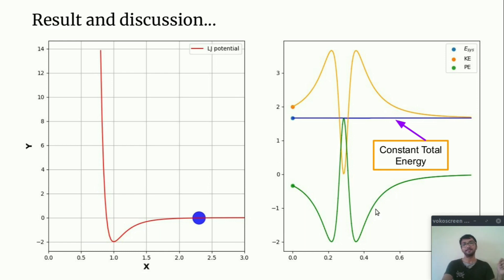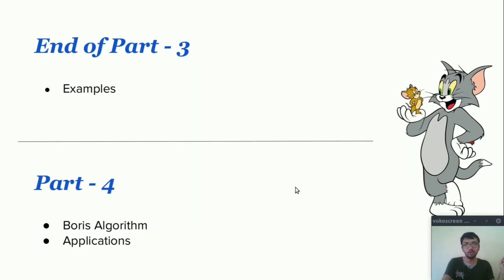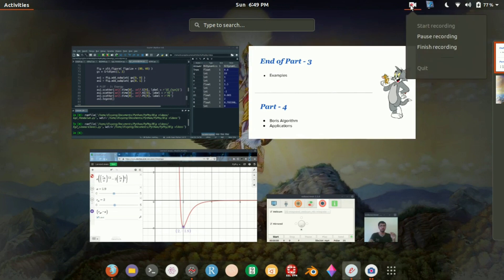This ends the third part of this tutorial series. In this part we have covered two examples: one is pendulum and second is Lennard-Jones potential. In next part we will see how to code the Boris algorithm. This algorithm is very useful when you do plasma physics and discuss some of the applications of molecular dynamics. That's it for today. See you in the next video. Bye.